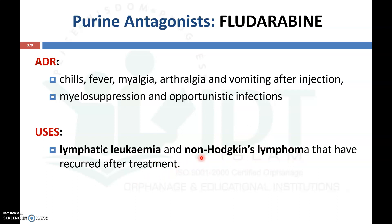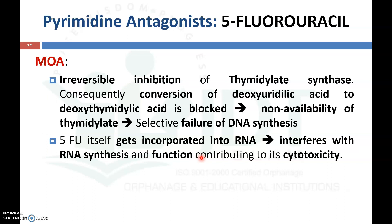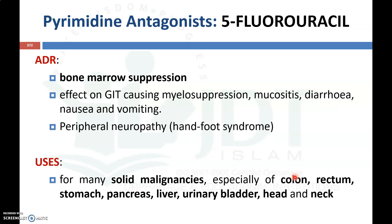The pyrimidine antagonist 5-fluorouracil acts by irreversible inhibition of thymidylate synthetase, preventing the conversion of dideoxyuridic acid to deoxythymidylate, causing non-availability of thymidylate and selective failure of DNA synthesis. It may also get incorporated into RNA, interfering with RNA synthesis and function. Important adverse drug reactions include bone marrow suppression, myelosuppression, mucositis, diarrhea, nausea and vomiting, and peripheral neuropathy including hand-foot syndrome.